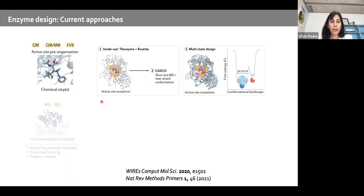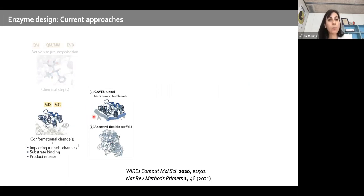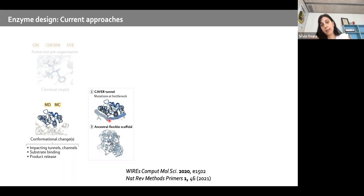To account for conformational changes, one can run extensive MD simulations and use the CAVER approach to evaluate tunnels — finding the narrowest regions and introducing mutations at these bottleneck regions. This way, mutations can be introduced not only in the active site but also in these tunnel regions.